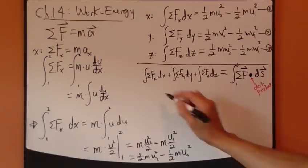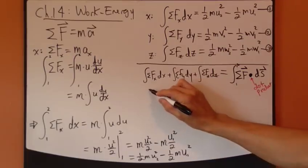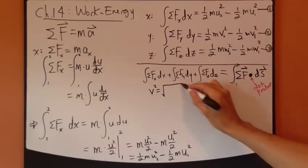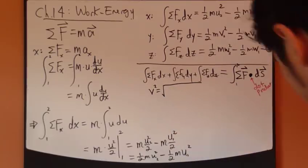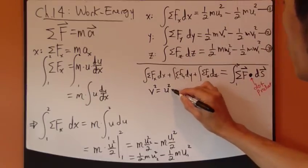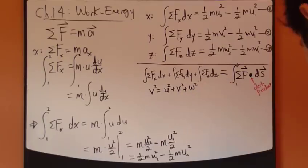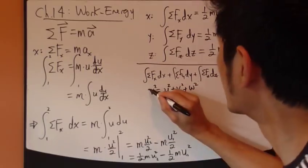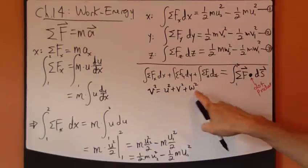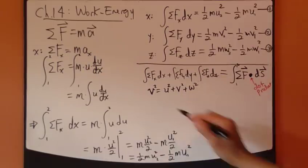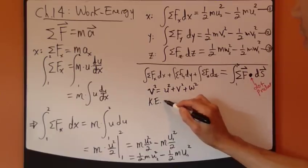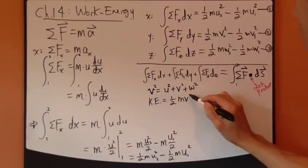And also, recognize that this velocity squared, the magnitude of the velocity, equals just like what I've written before, velocity square equals the x component of the velocity, u square plus v square plus w square. So, velocity magnitude equals the square root of the sum of the three components.